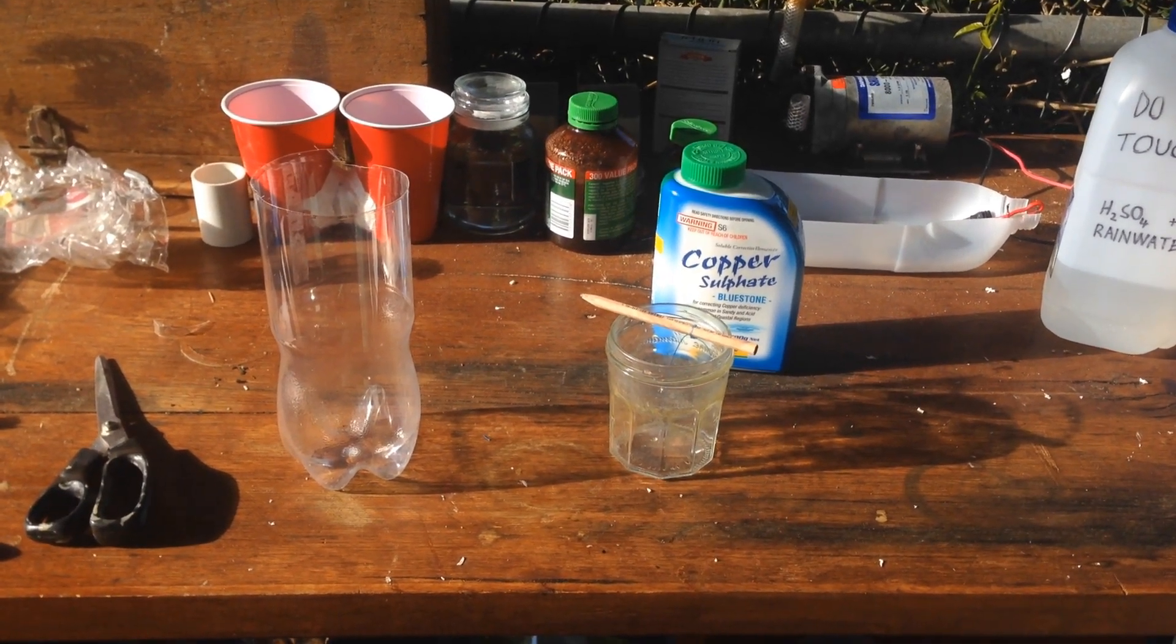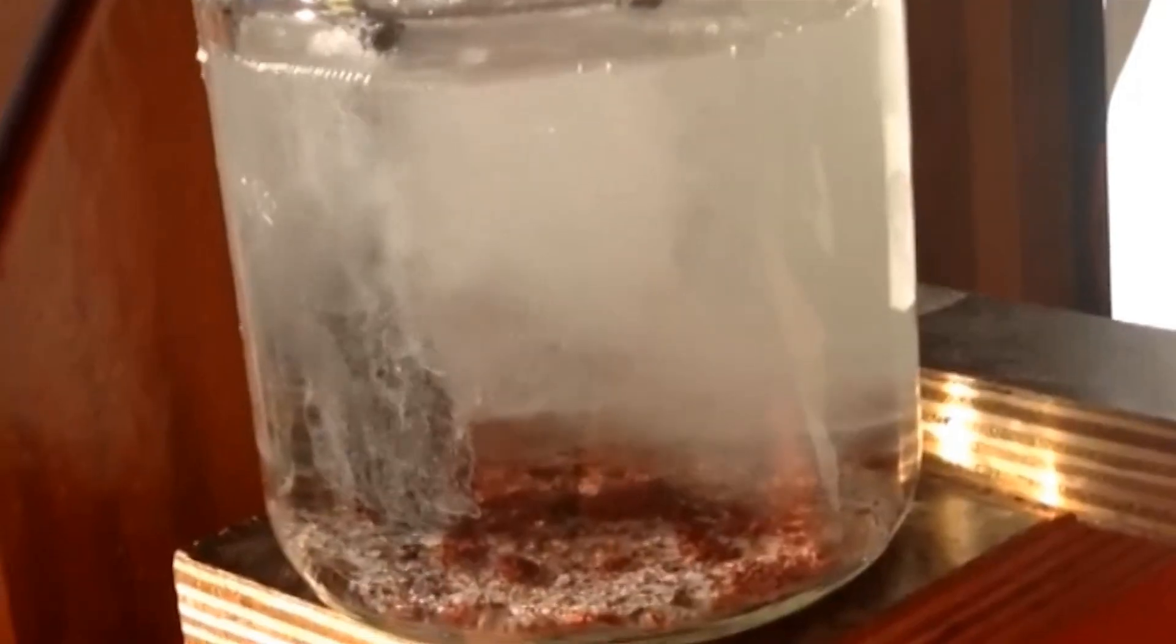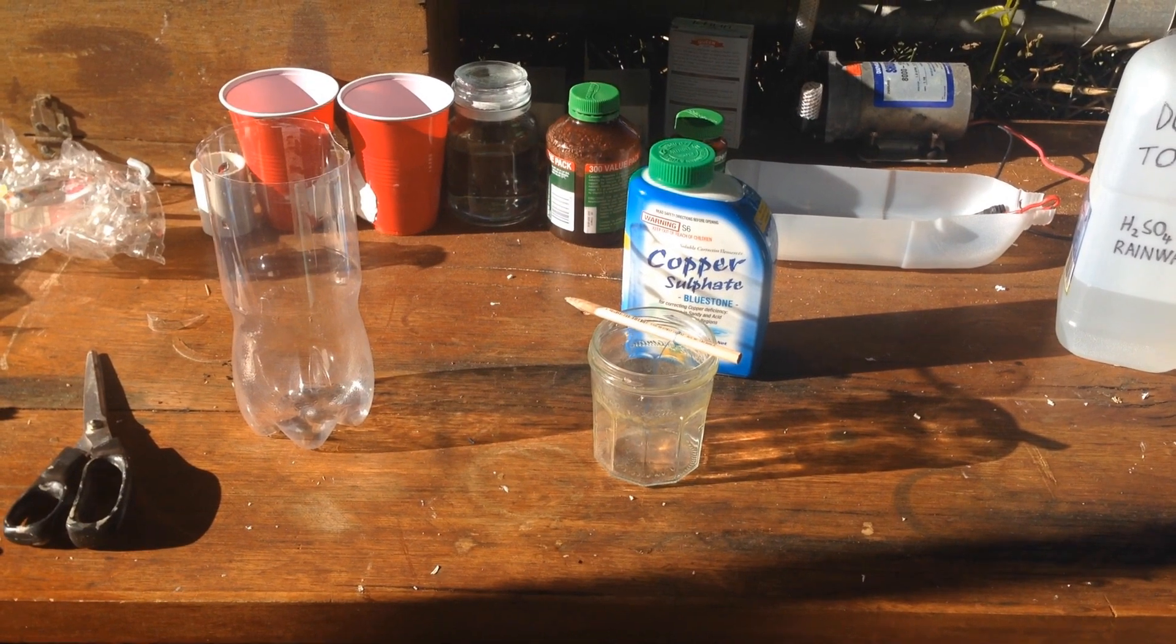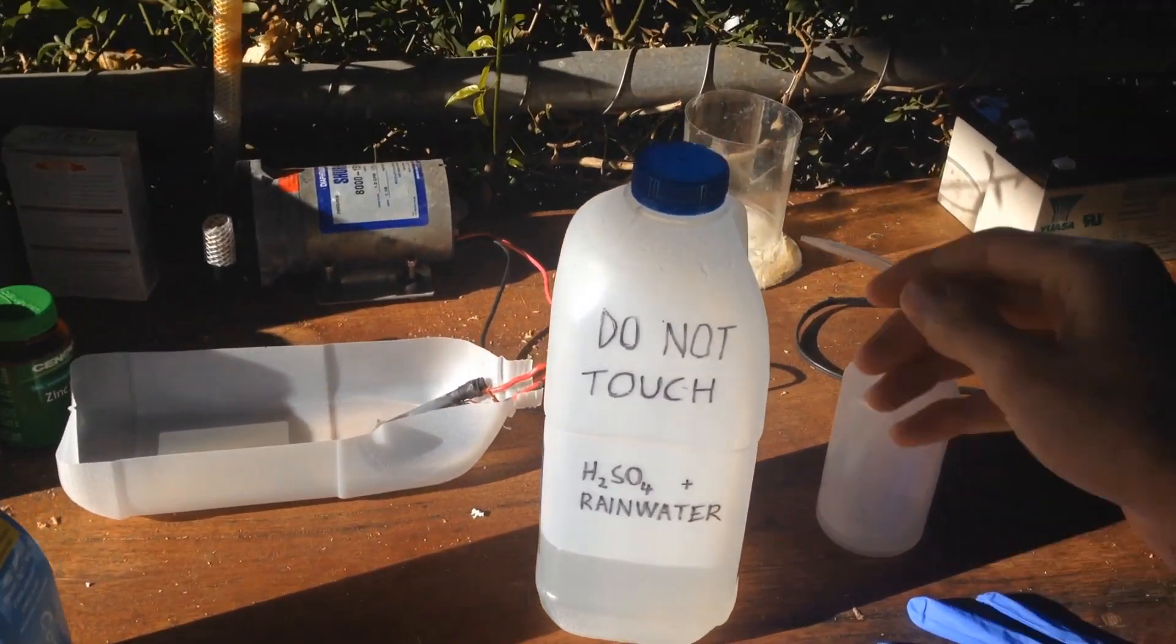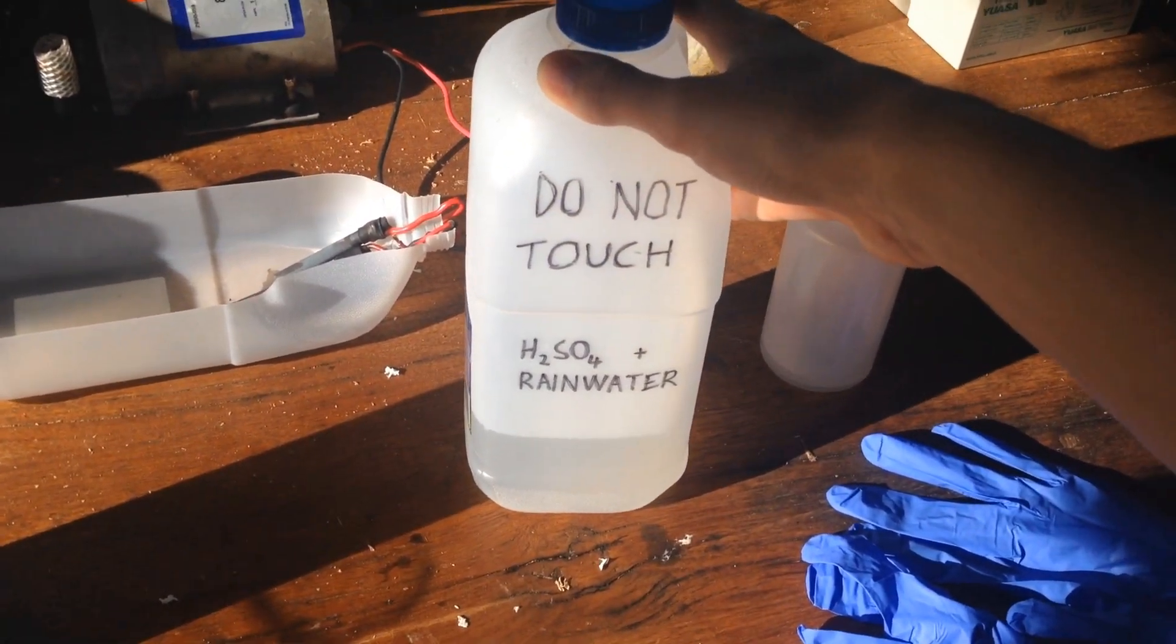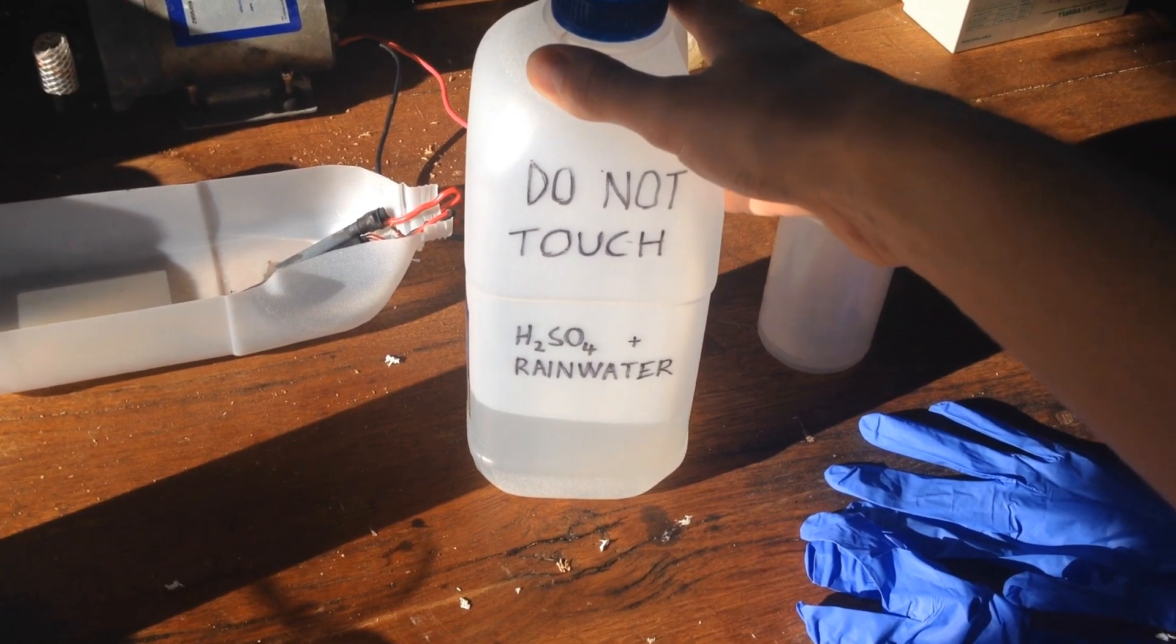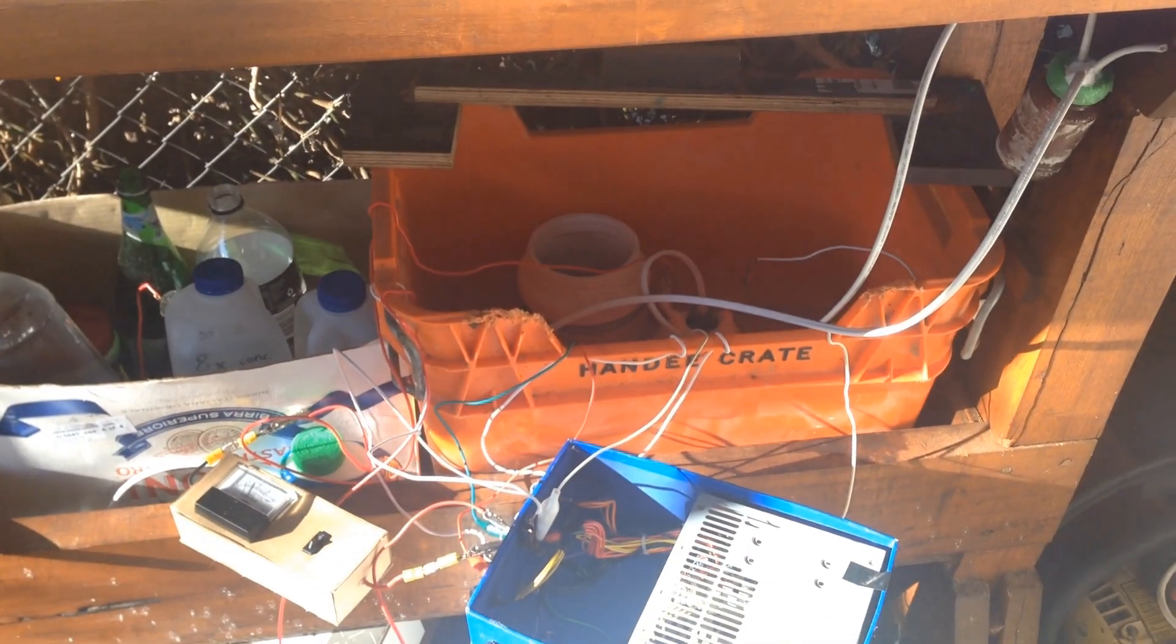Hi guys, Harry here, welcome to Scrap Science. So I recently made a video on how to make sulfuric acid from copper sulfate, and since then I've made a fair bit more. This is 600 milliliters of 2 molar sulfuric acid, and I'm actually making it for a heavy water generator that I'm building.